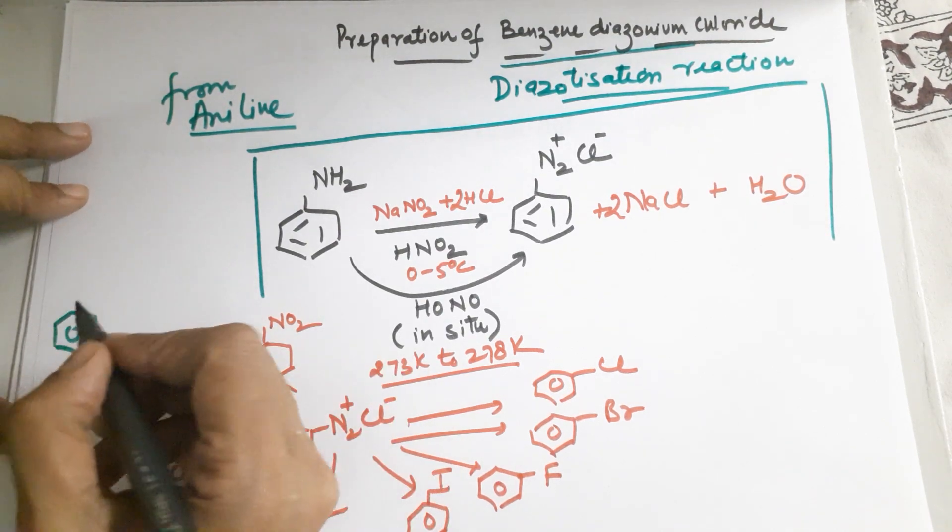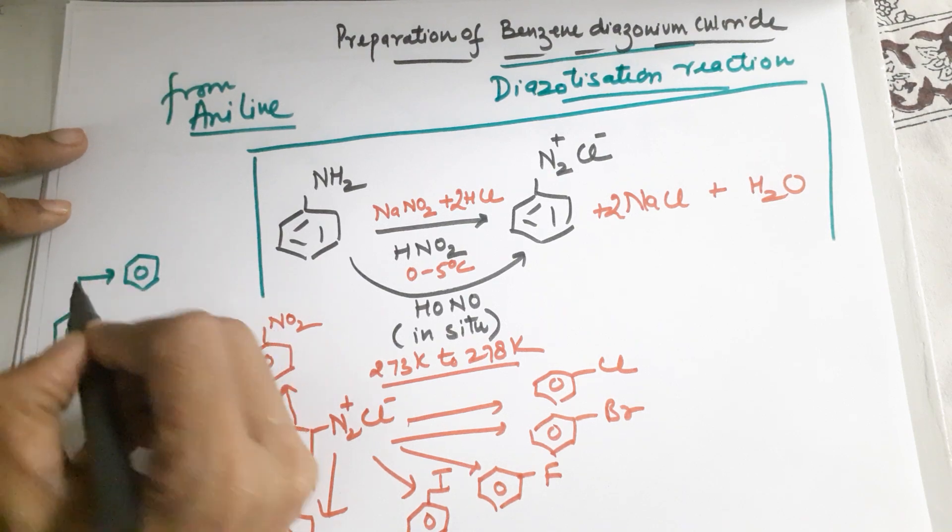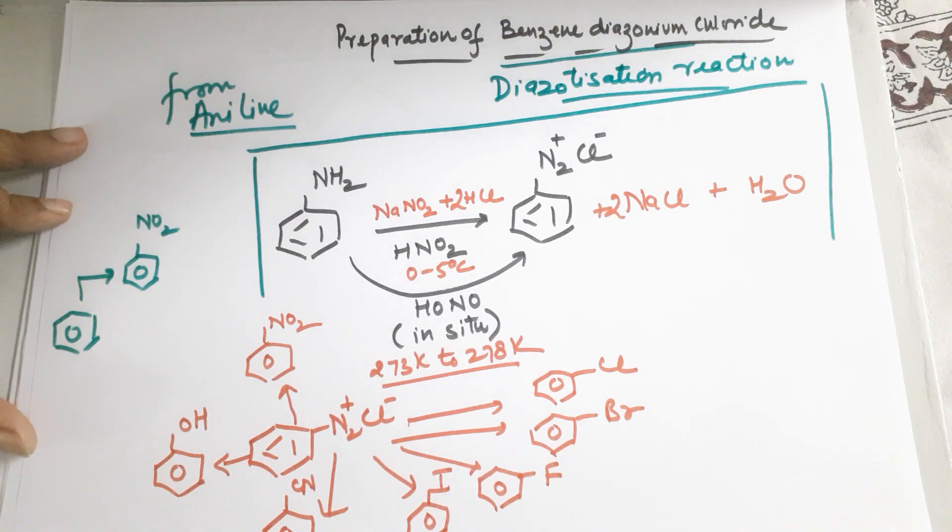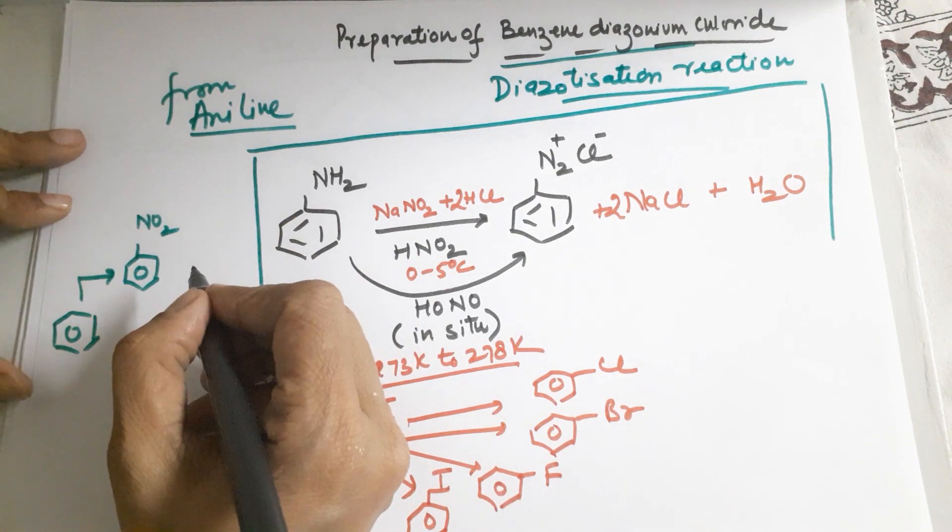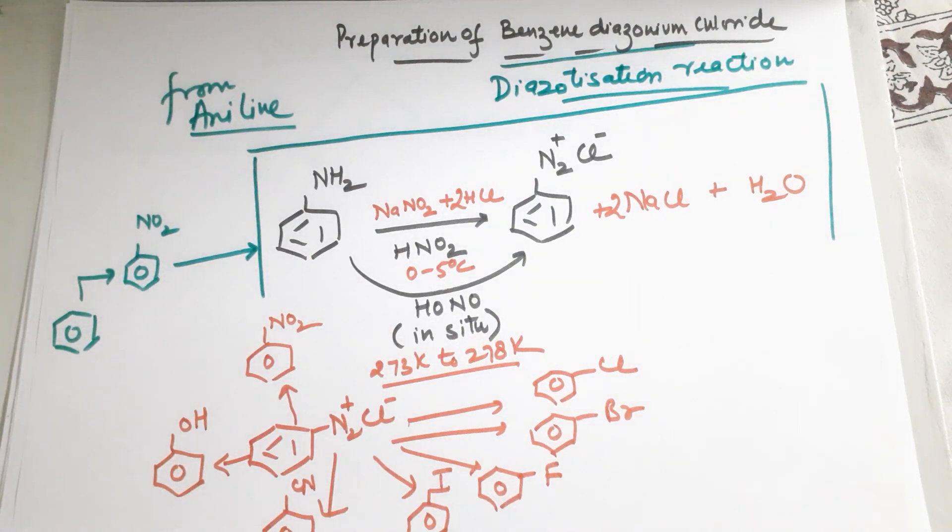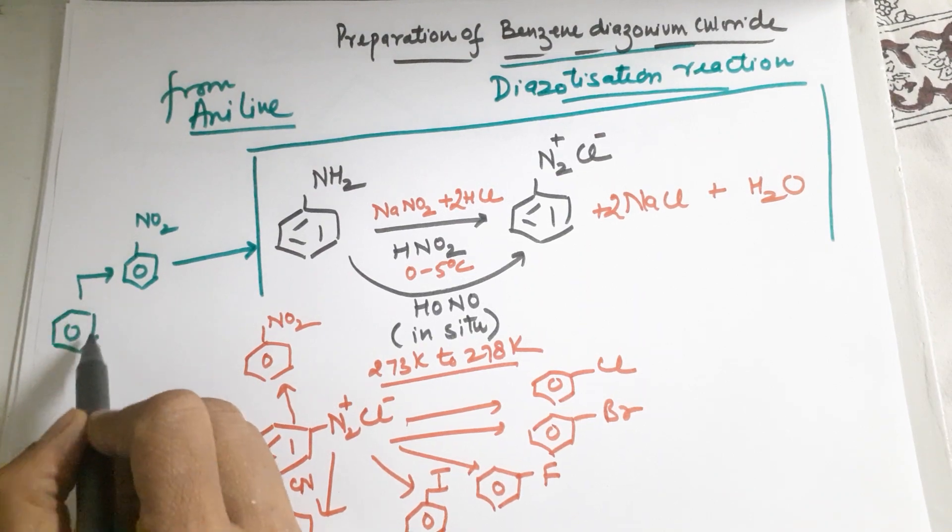You have to start with benzene. Everyone knows how to make nitrobenzene from benzene. You use concentrated nitric acid plus concentrated sulfuric acid, and you get nitrobenzene.